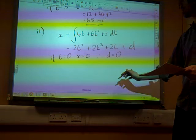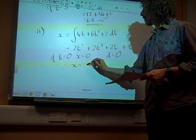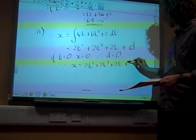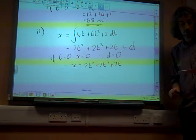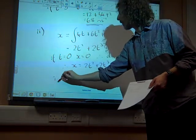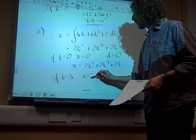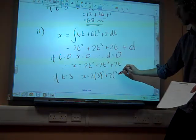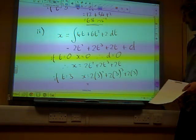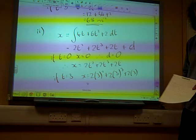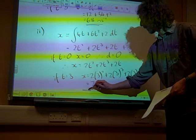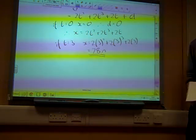Therefore this new constant of integration that I just introduced is also 0. And so we're left with x as being 2t squared plus 2t cubed plus 2t. And we wanted to know what happened when t was 3. If t equals 3, we've got x is 2 times 3 squared plus 2 times 3 cubed plus 2 times 3, so that's 18 plus 54 plus another 6, so that's 78 meters.